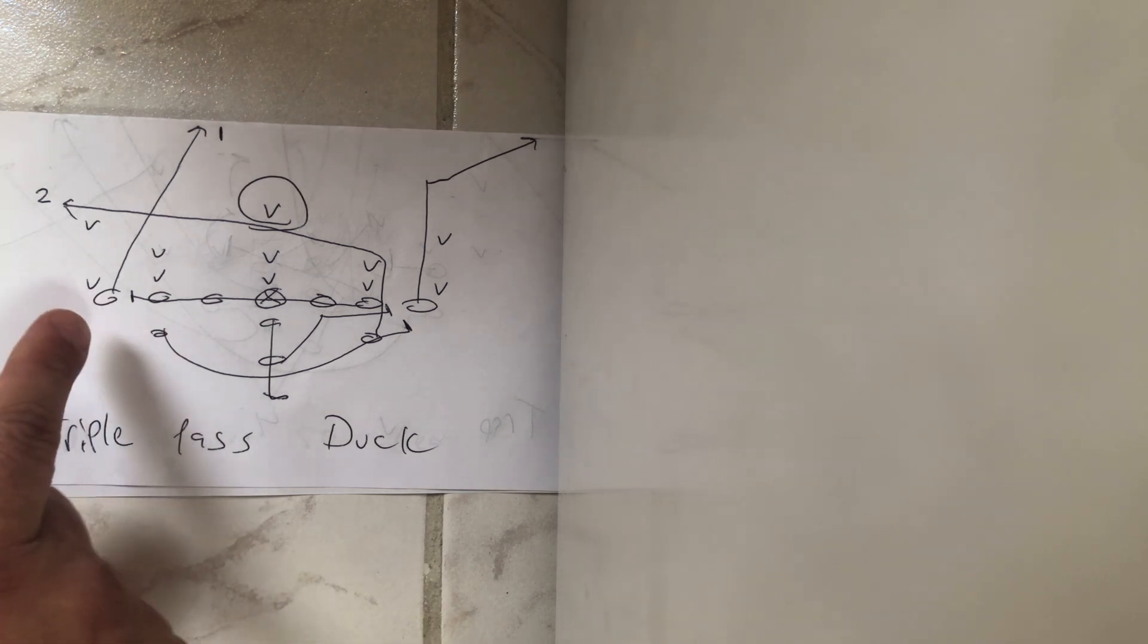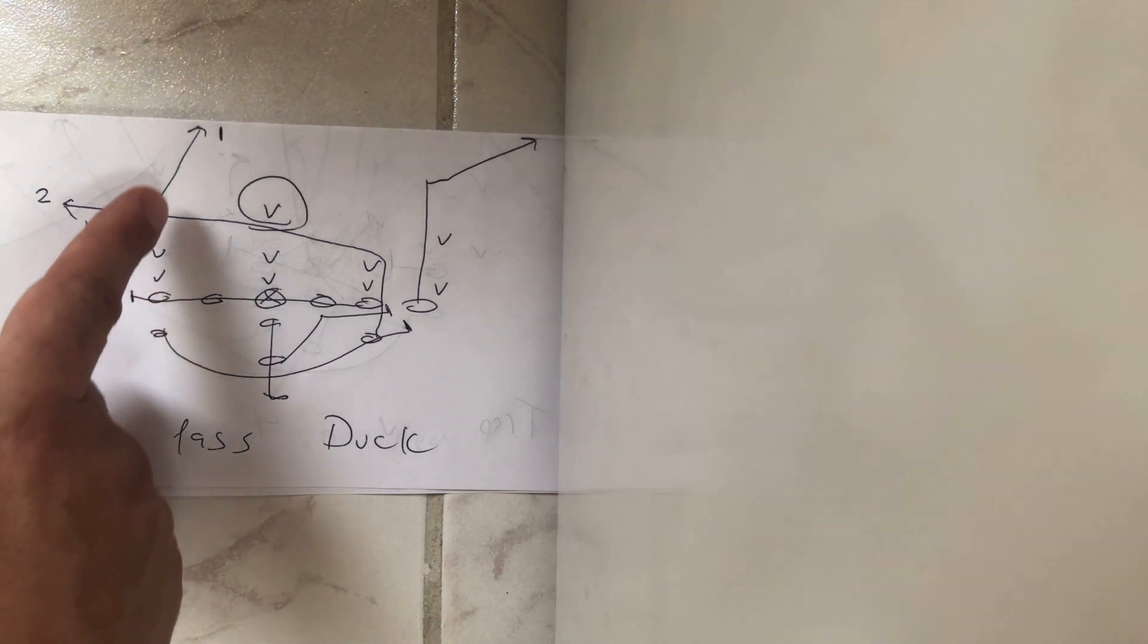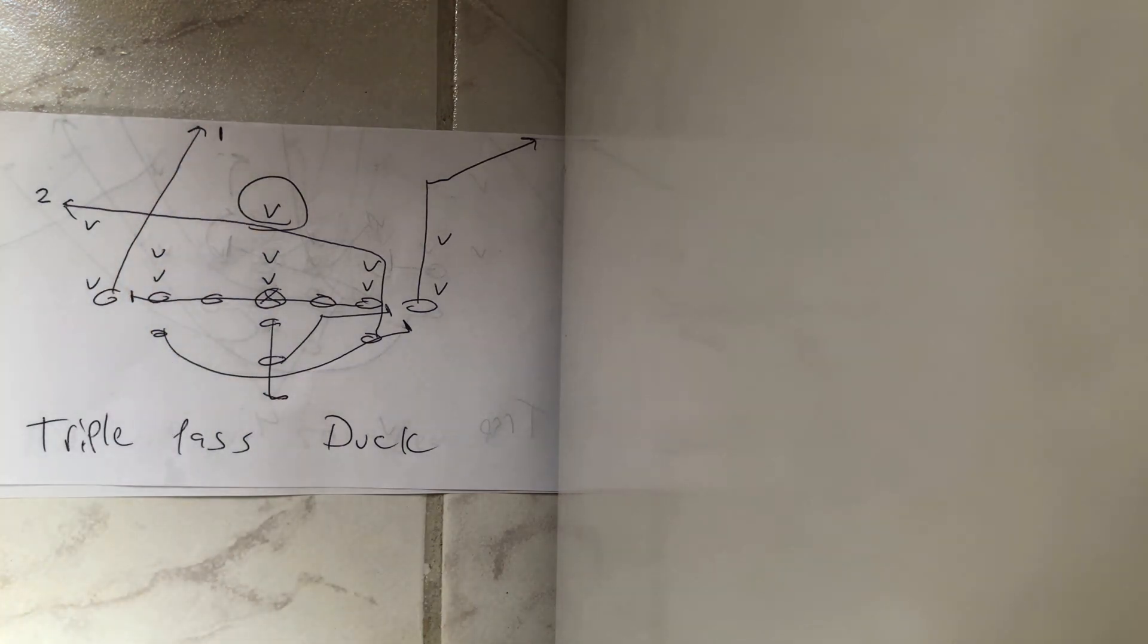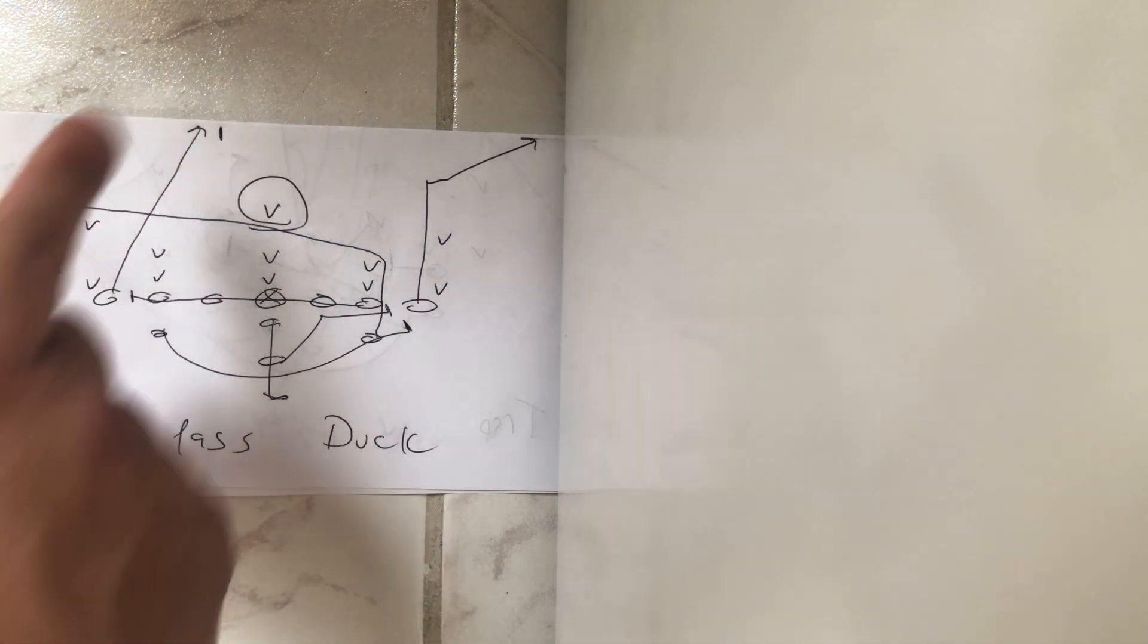The backside receiver is going to run a 15 degree cutoff route. So he's going to stay at about 15 degrees on a diagonal line. He doesn't want to get too diagonal.